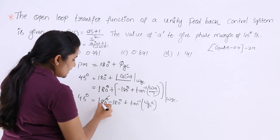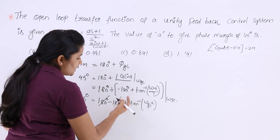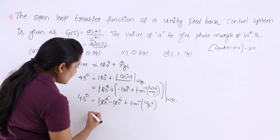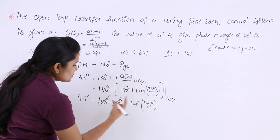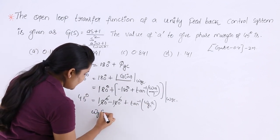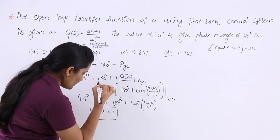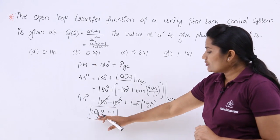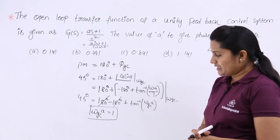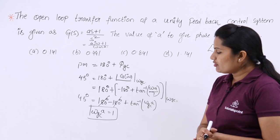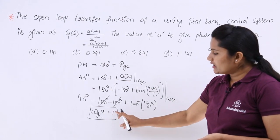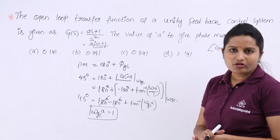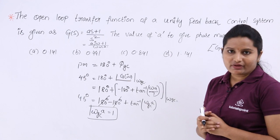The 180° terms cancel, leaving tan⁻¹(ωGC · a) = 45°. Since tan(45°) = 1, we get ωGC · a = 1. Therefore a = 1 / ωGC. But we still need to find the gain crossover frequency.